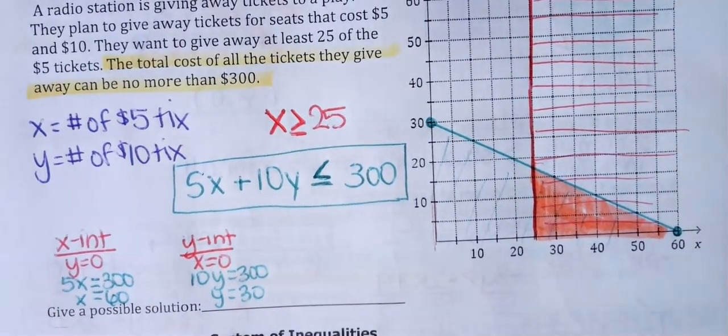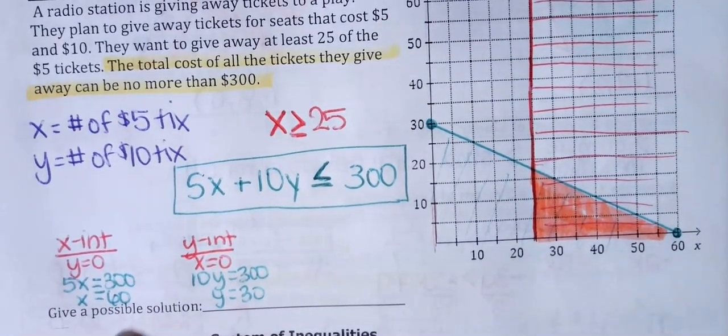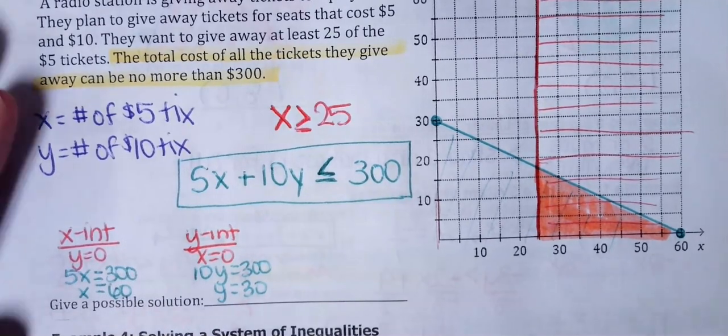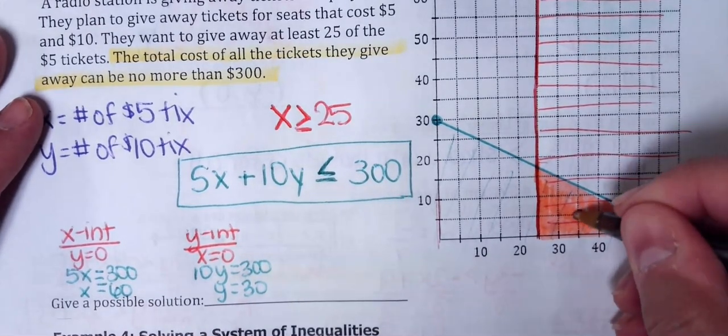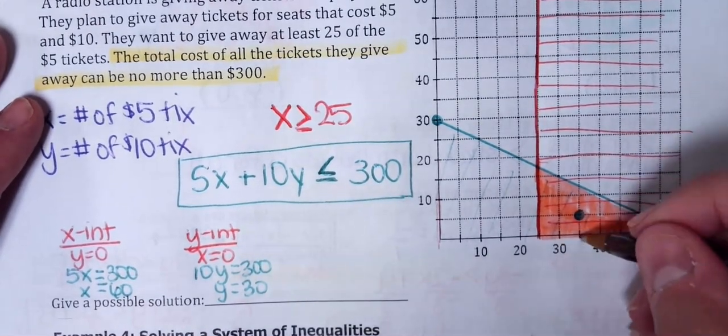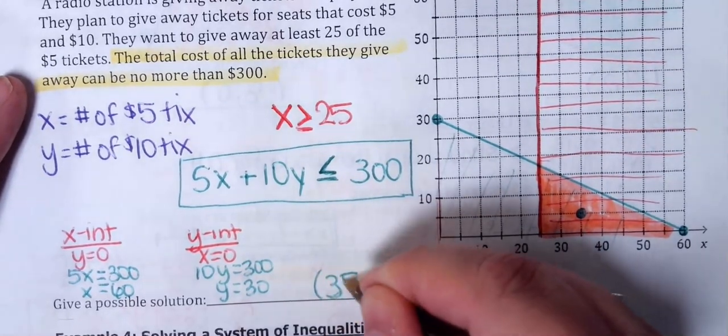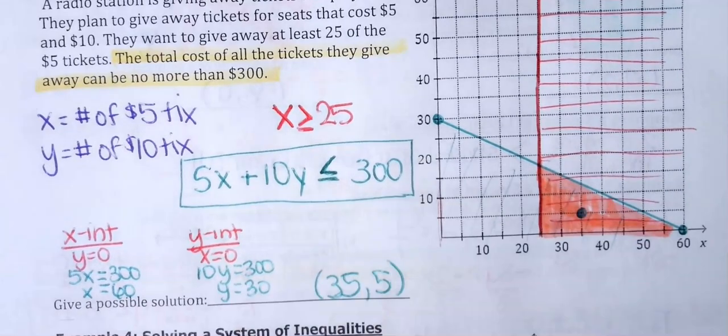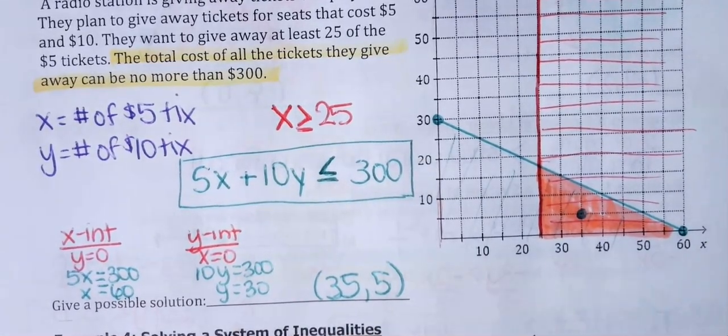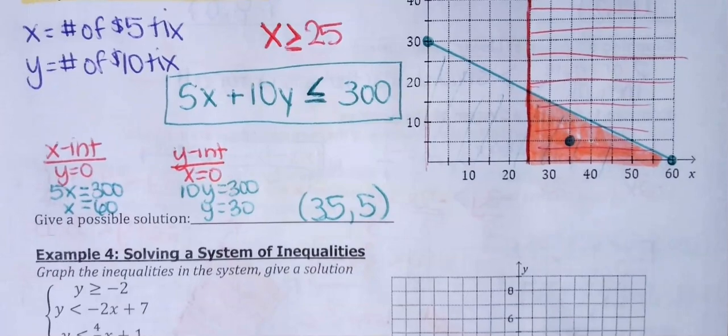Okay, and then if you have to give a possible solution, we just have to find any point in this lovely shaded area. I'm just going to randomly pick a point that's in the shaded part. This is the point for my representation. I have 35 and 5, just as a possible example. Any point that falls in there would also work, and I'm going to do one more.